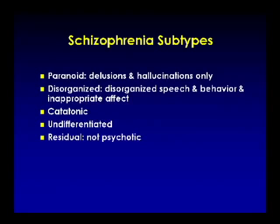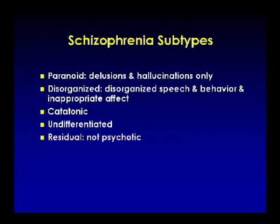Subtypes of schizophrenia — it's unclear how valid these subtypes are, and there's some evidence they may change over time. Paranoid subtype is probably the most valid and most clinically relevant; it's the subtype that only has psychotic symptoms — hallucinations and delusions — without cognitive deficits, disorganization, or negative symptoms. The disorganized subtype involves disorganization of speech and behavior, often with inappropriate affect. Catatonic subtype — noting that catatonia occurs in illnesses other than schizophrenia — is also a subtype here.